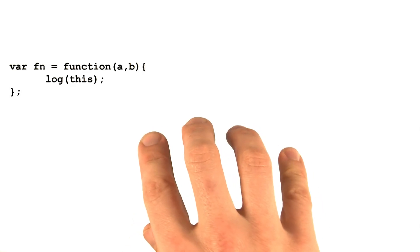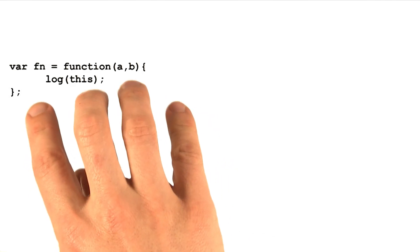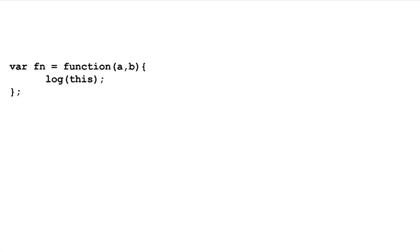In order to start asking the question, what does the keyword this refer to? We really need a code example where the keyword this appears. Here we have it appearing inside a function, which is generally how you're going to see it.